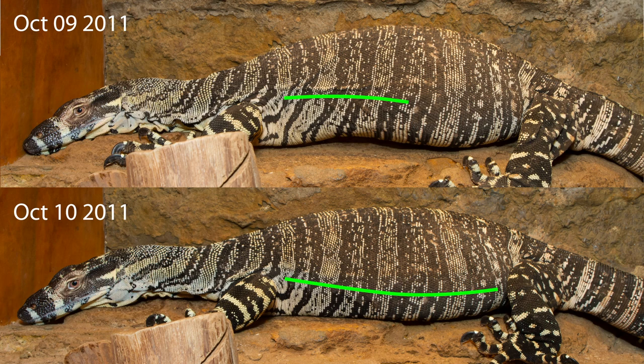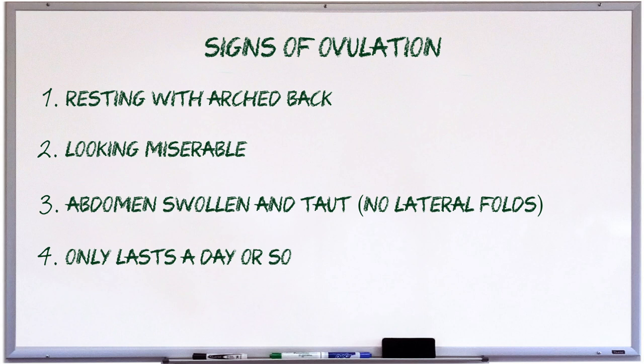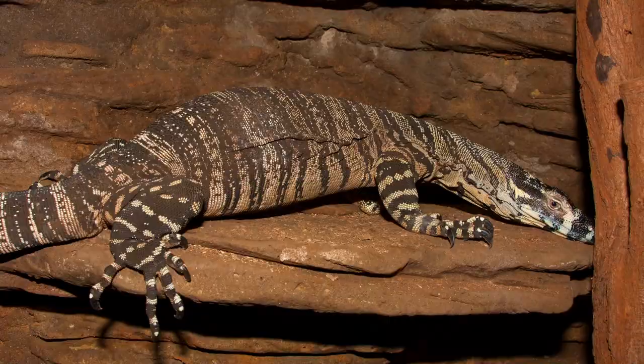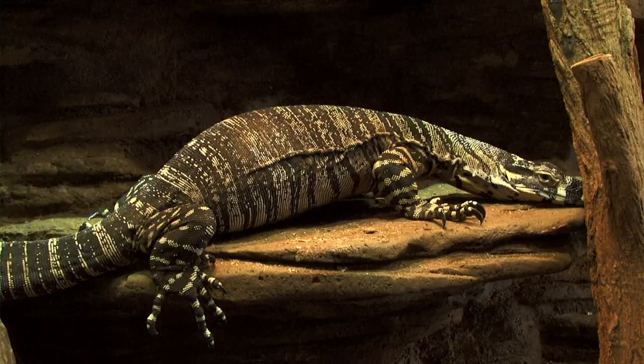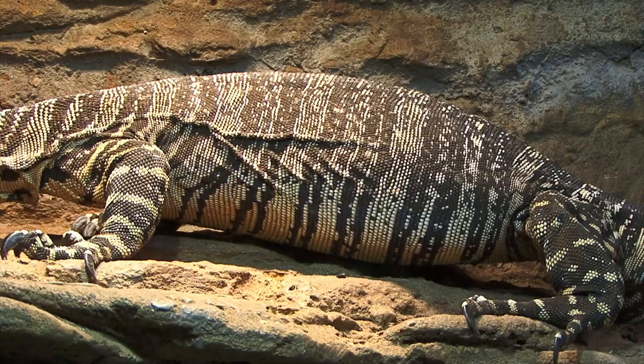If you look at the dates of these photographs, it tells you something else about ovulation: it only lasts for a day or so, sometimes all happening in half a day. So if you're away at work during the day, it's really easy to completely miss it, although often the female will already start to look a little uncomfortable first thing in the morning. When we look at videos of females ovulating, you'll notice they don't look much different from the still images. The only difference is you can see the female breathing or closing her eyes. When the ovulating female does move around, she moves quite carefully, giving the impression that it is painful for her to bump her abdomen on anything.